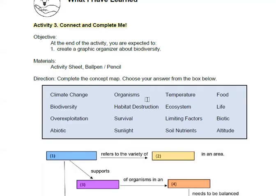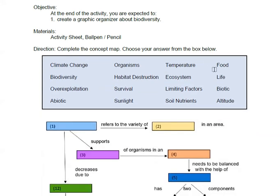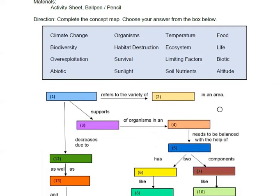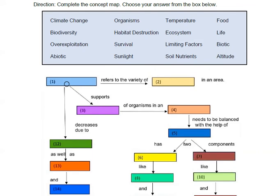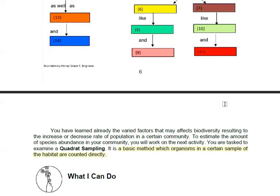The next activity this morning is Activity 3, 'Connect and Complete Me.' Here you are to create a graphic organizer about biodiversity. Copy and answer the concept map, choosing your answers from the given box and filling in the rest.